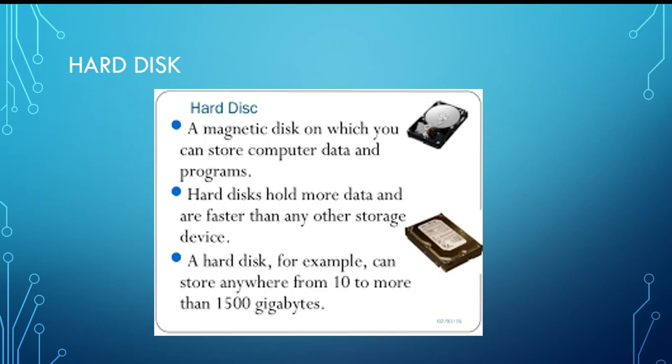Let's have a look at hard disk. Here you can see the pictures of a hard disk. A hard disk is a magnetic disk on which you can store computer data and programs. Hard disks hold more data and are faster than any other storage device. A hard disk can store up to 1,500 gigabytes of data — that's a really very high memory capacity.